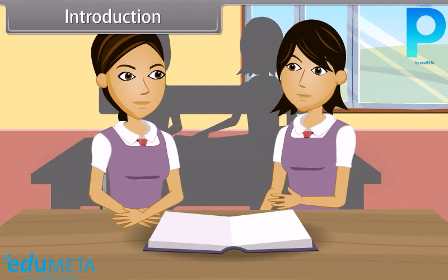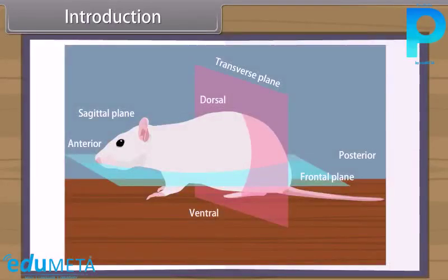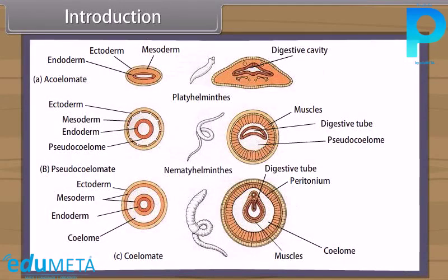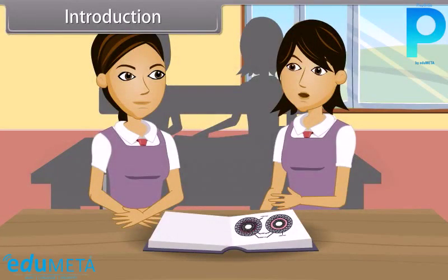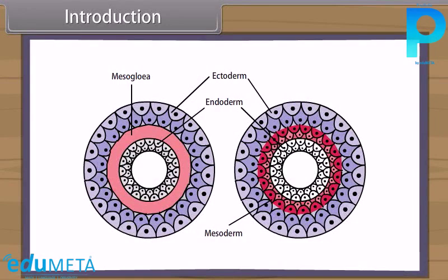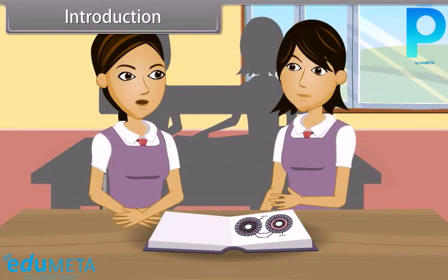According to symmetry, animals are either radially symmetrical, e.g. sponges, coelenterates, and echinoderms, or bilaterally symmetrical, e.g. nematodes, arthropods, annelids, and vertebrates, and some are asymmetrical, e.g. snails. On the basis of body cavity, animals are either acoelomates, e.g. coelenterates and flatworms, or pseudocoelomates, e.g. nematodes. According to number of germ layers, animals are either diploblastic, e.g. sponges and coelenterates, or triploblastic, e.g. flatworms to mammals.